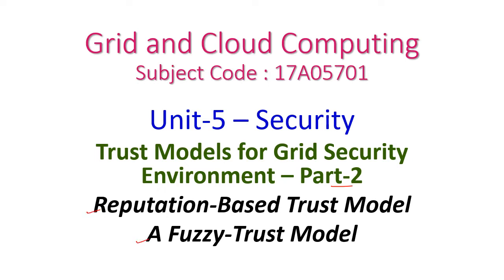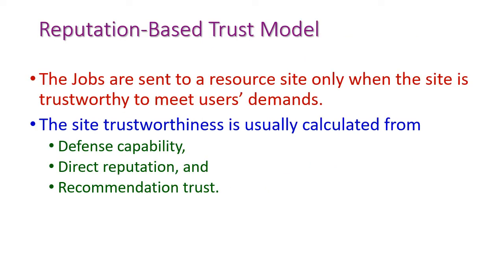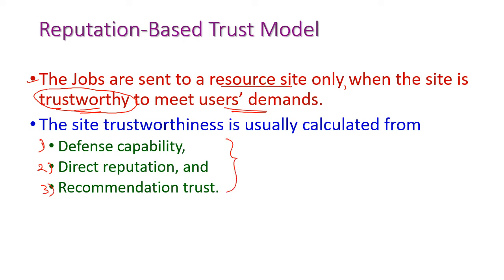First let us see the reputation-based trust model. In this model, jobs are sent to a resource site only when the site is trustworthy to meet users' demand. So computing the trustworthiness is very important for a particular site using the following information: first is defense capability, second is direct reputation, and third is recommendation trust. These three values are very important to compute the trustworthiness of a site.